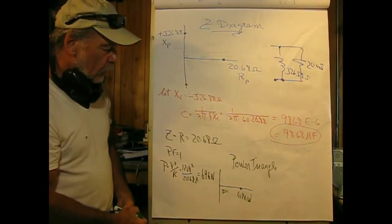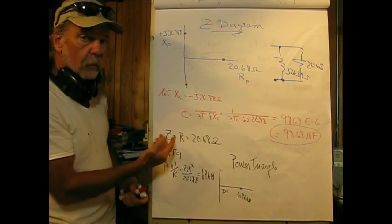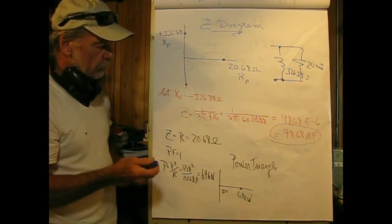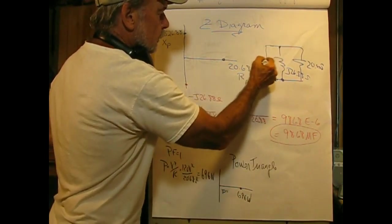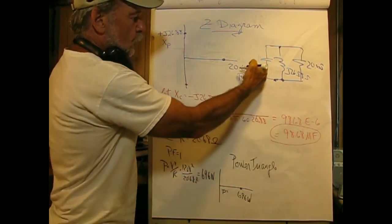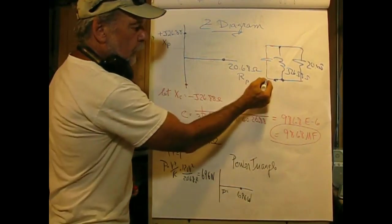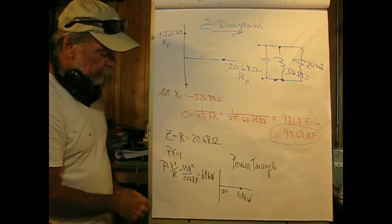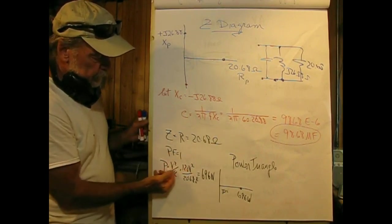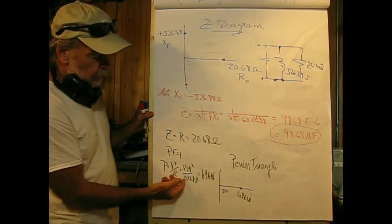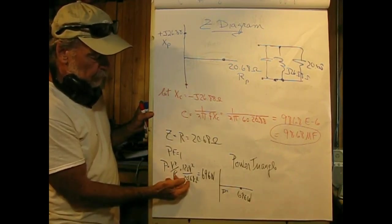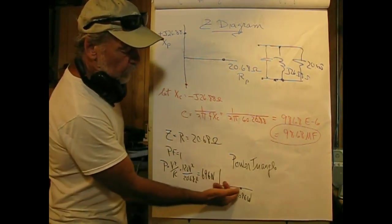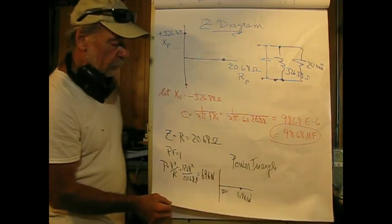Either method would work. In this case, Z impedance equals the resistance equals 20.68 ohms. There's no reactive component in this. Let me put our C in here, which would have a negative J 26.88. Don't want to forget him, or we've done all this work for nothing. Under this circumstance, power factor equals 1, and power equals V squared over R, 120 volts squared divided by our parallel resistive value 20.68 ohms, we get 696 watts, and the power triangle's not too exciting, just comes out on the real with 696 watts.